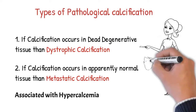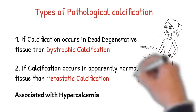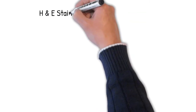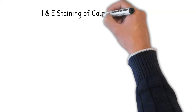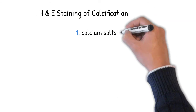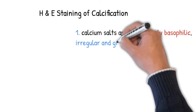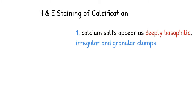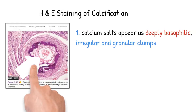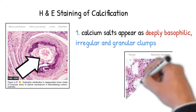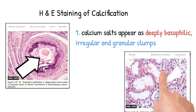Histologically, if we do H&E staining of these calcium deposits, the calcium salts appear basophilic because calcium itself is a basophilic ion, and it looks like a clump-like material situated in the tissue.